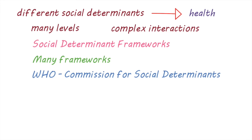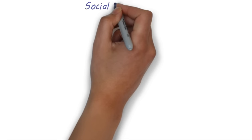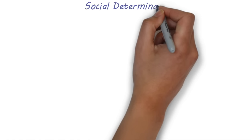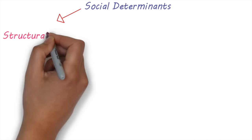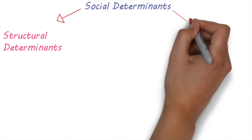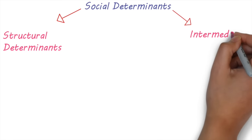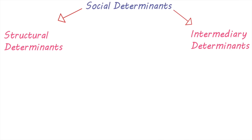According to this framework, there are two broad types of health determinants that influence health and can lead to health inequities. These are structural determinants and intermediary determinants.